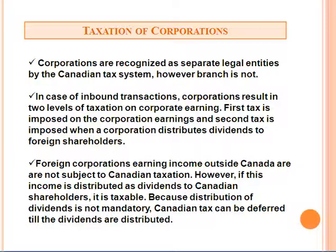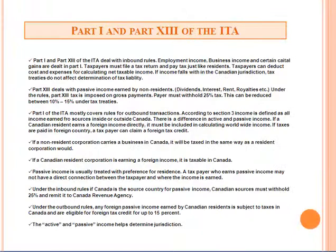Corporations are recognized as separate legal entities by the Canadian tax system; however, a branch is not. In the case of inbound transactions, corporations result in two levels of taxation on corporate earnings. The first tax is imposed on the corporation's earnings, and the second tax is imposed when a corporation distributes dividends to its foreign shareholders. Foreign corporations earning income outside Canada are not subject to Canadian taxation; however, if this income is distributed as dividends to Canadian shareholders, it is taxable. Because distribution of dividends is not mandatory, Canadian tax can be deferred until the dividends are distributed.